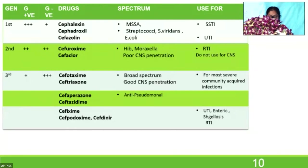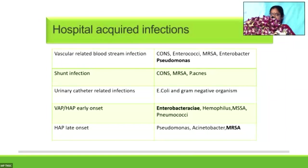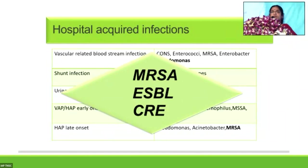Where does ceftriaxone not help at all? Ceftriaxone is susceptible to ESBL-producing organisms and has absolutely no activity against MRSA, pseudomonas, and anaerobes. In hospital-acquired infections, the three important bugs we are worried about are MRSA, extended-spectrum beta-lactamase-producing organisms, and carbapenem-resistant enterobacteria.